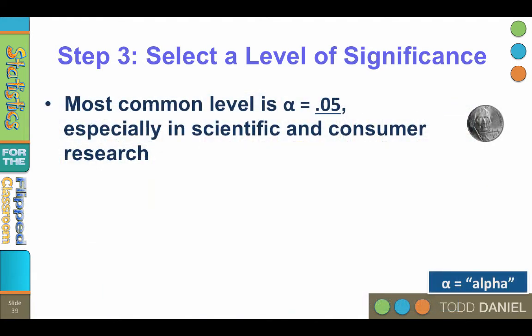The most common level of significance is .05, especially in scientific and consumer research. .05 is 5%. Another way to think about this is to imagine that a dollar is 1.00 or 100%, so 5% .05 would be like a nickel.